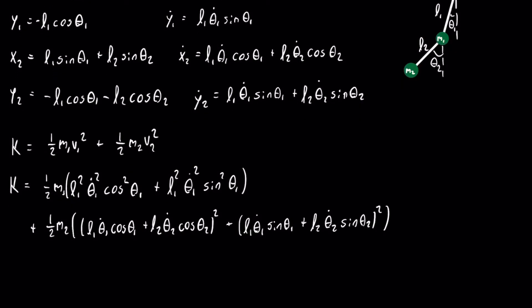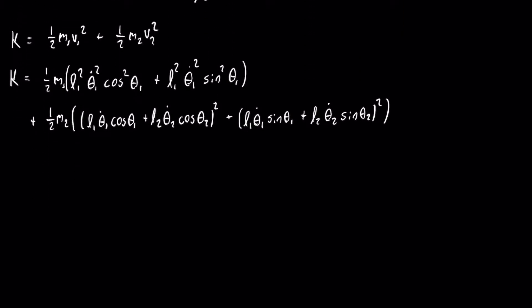We can use the first identity to simplify the first term of the kinetic energy equation. Inside of the parentheses, if we factor out L1 squared theta 1 dot squared, we are left with cosine squared theta 1 plus sine squared theta 1, which we know is equal to 1. All we're left with is 1 half m1 times L1 squared theta 1 dot squared.